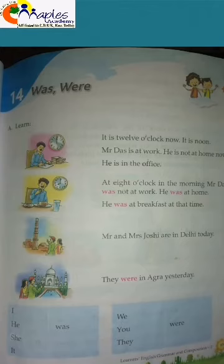We use 'was' with the pronouns she, he, and it. For example: 'He was at breakfast at that time.' Another example: 'He was at home.'